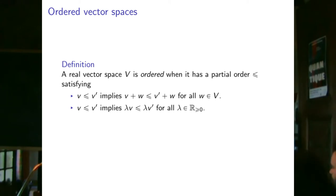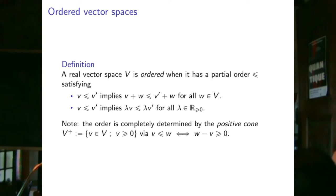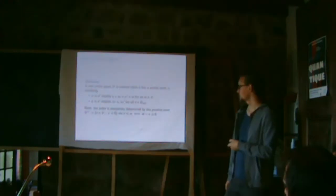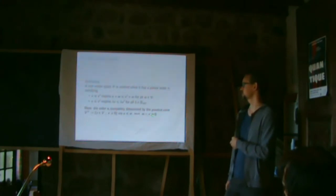A vector space is ordered if it's a real vector space with a partial order that is preserved by addition. So if v is less than v', adding a vector w to both sides preserves the order, and scaling by a positive real number also preserves the order. The order is completely determined by what we call the positive cone — the elements greater than zero — so v ≤ w if and only if w − v is positive.